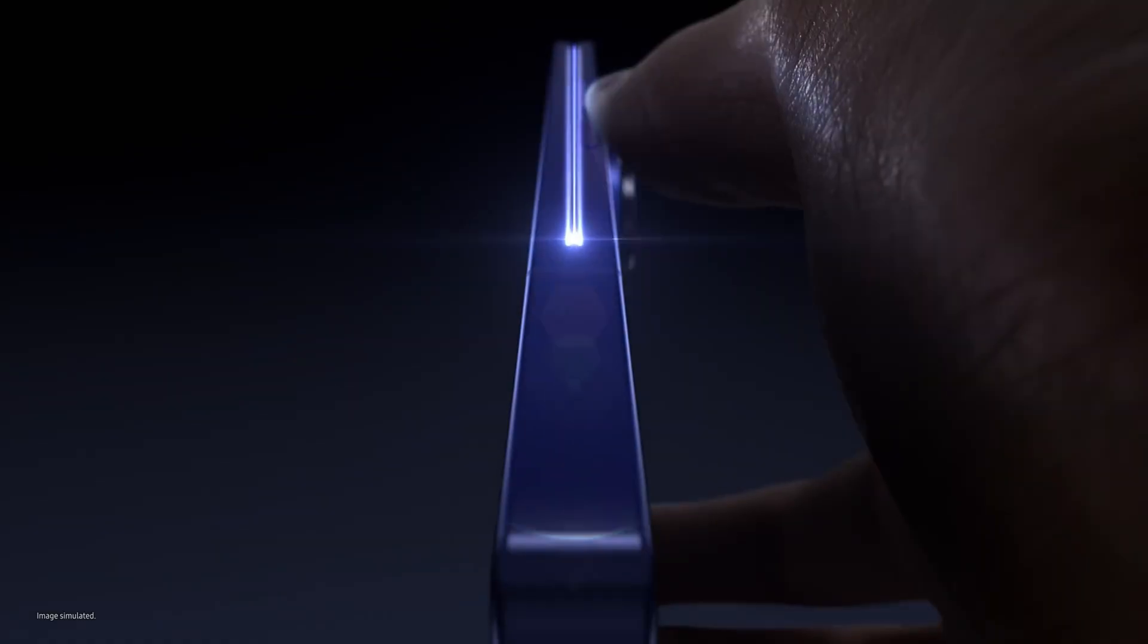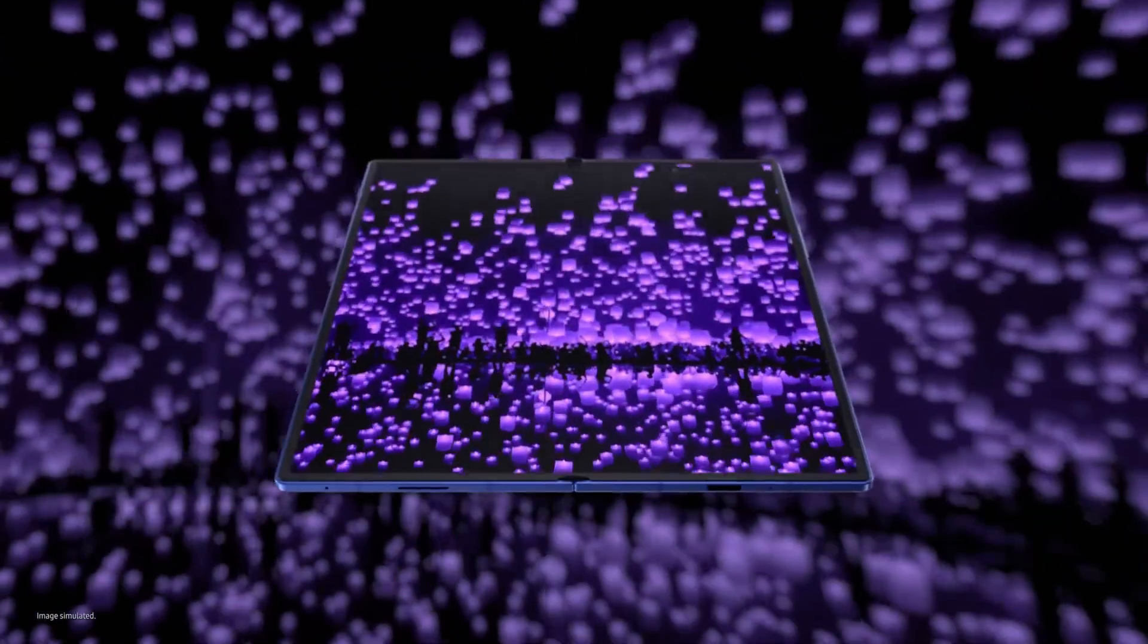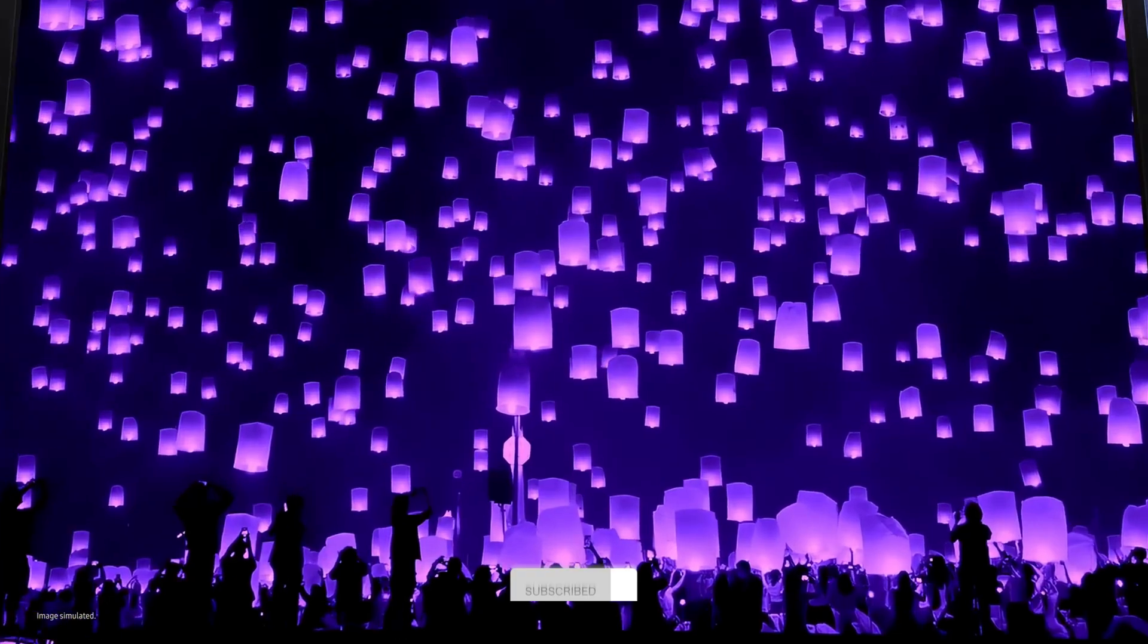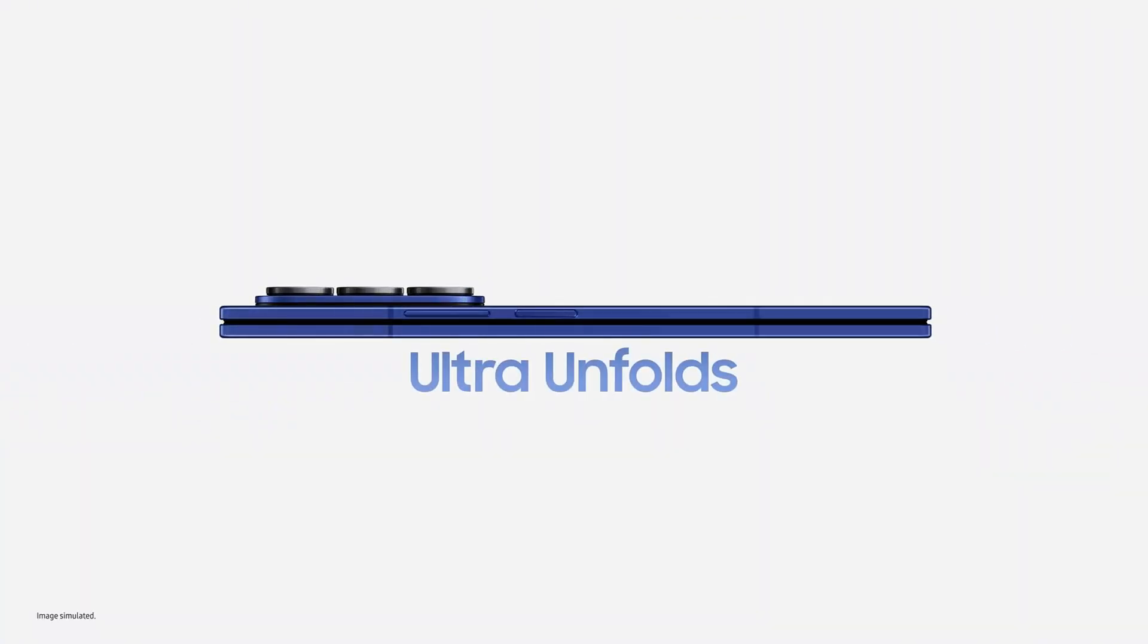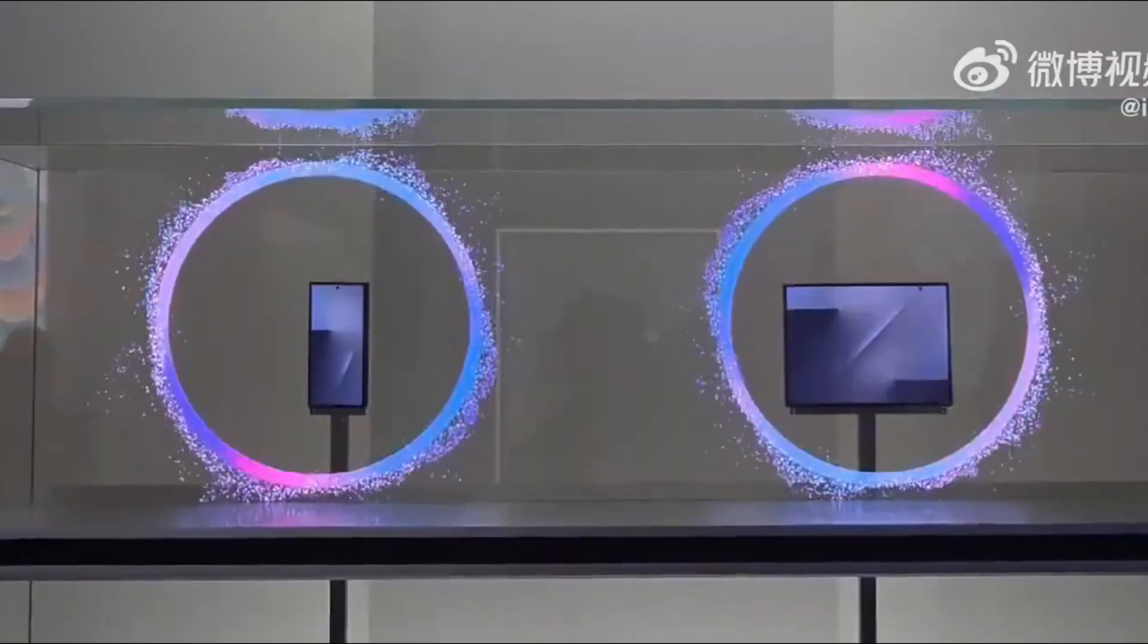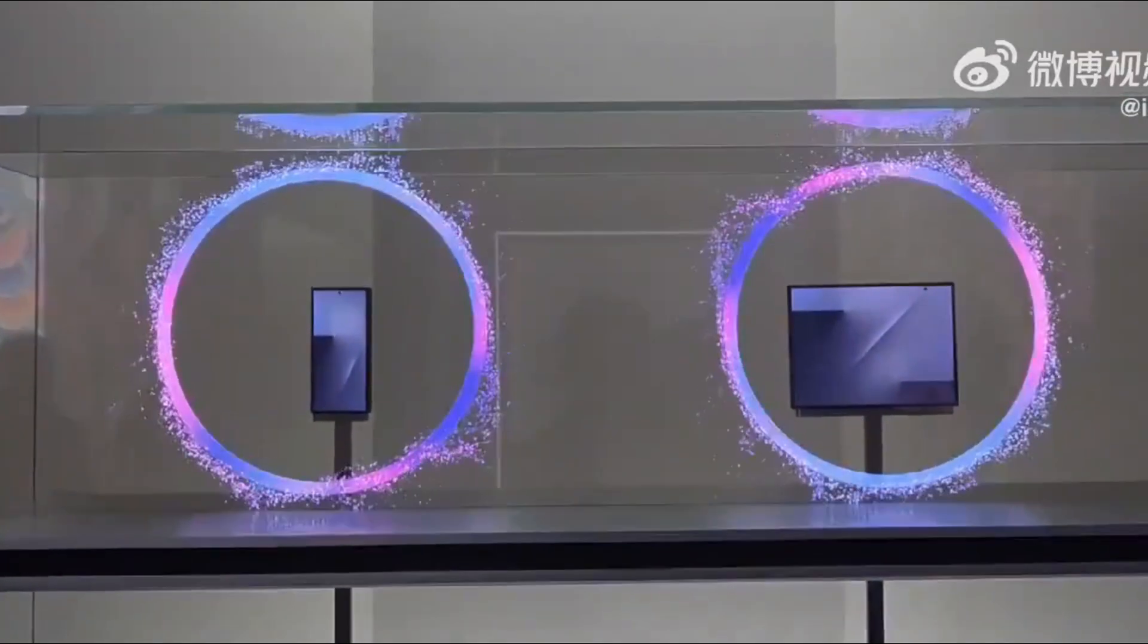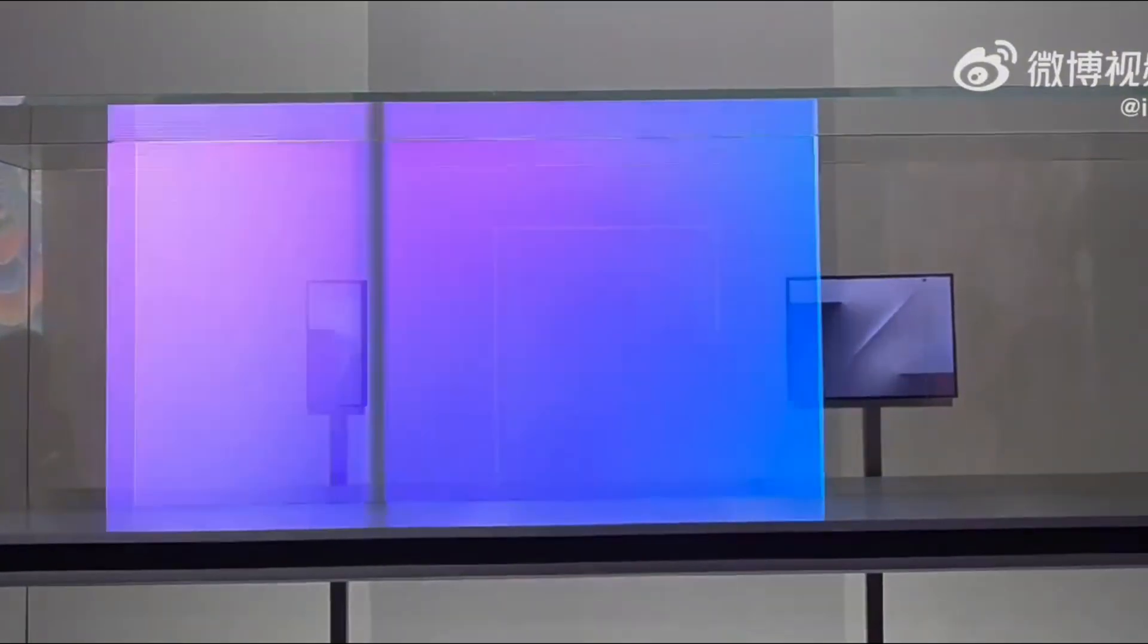This indicates a design compromise for a first-generation device. The complexity and durability requirements of triple folding might have forced Samsung to use thicker bezels around the hinge. This is likely a first-generation tri-fold issue that will be resolved in subsequent generations.